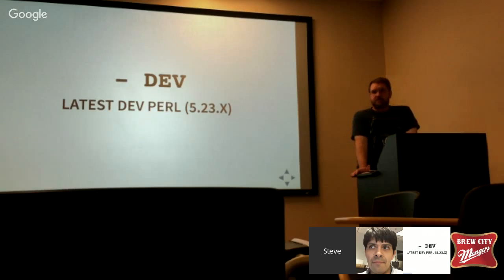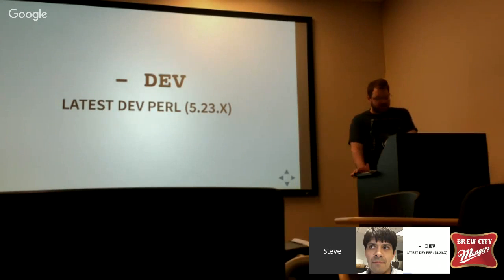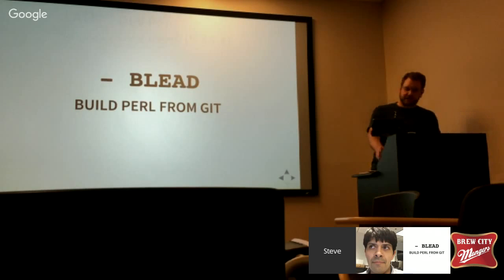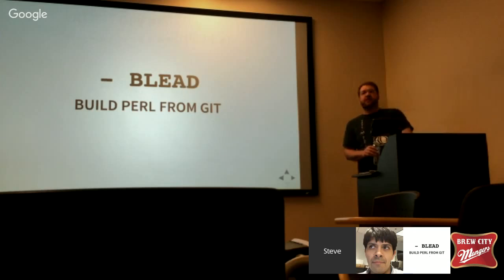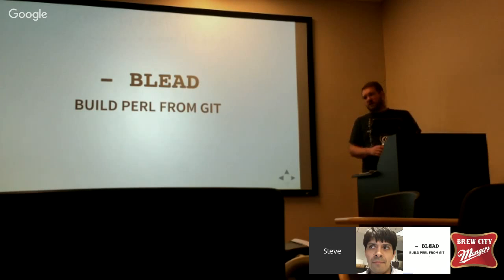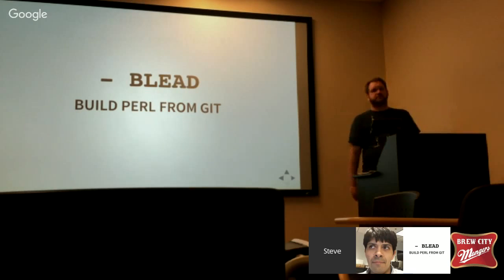You can also specify the word 'dev', which will be the latest dev release — currently 5.25.1. We are into the 5.25s. And finally, if you want to, you can specify 'bleed', which is the latest Perl from the Git repository where Perl lives. It'll download it, compile it, and run your tests against it. This actually doesn't take that long — maybe 5 or 10 minutes. So if you want to make sure your code runs on git master for Perl, you can say 'bleed'.